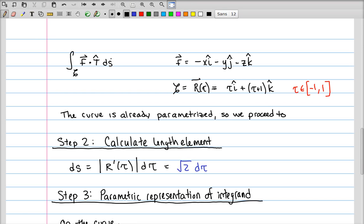The vector field f was given to be minus xi minus yj minus zk, while the curve c is the set of points described by the vector function r of tau, where x equals tau, y equals 0, so there's no j component, and z equals tau plus 1, with tau going from minus 1 to 1. So this parameterization was given to you when you started the problem. We don't need to do step 1, we can proceed straight to step 2.